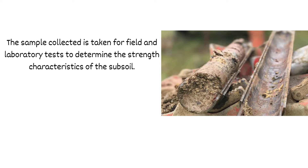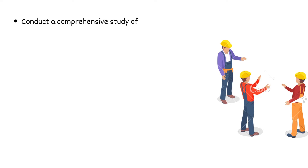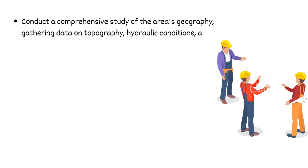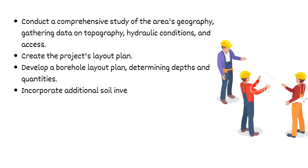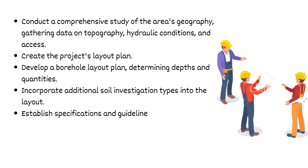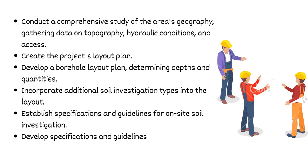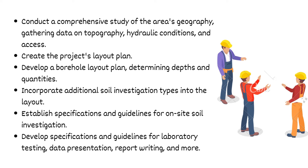Stage three is the plan for detailed investigation of the soil. This includes a detailed study of the geographical conditions of the area — collection of available information from the site like topography and geographical maps, topographical features, hydraulic conditions, water table fluctuations, flood conditions, and access to the site. It also involves preparing the layout plan of the project, preparing the borehole layout plan with depth and number of boreholes marked on the layout, identifying additional types of soil investigation needed, preparing specifications and guidelines for field investigation, laboratory testing of collected samples, and presentation of field and laboratory test results. This is mainly involved when the project is large and the area under investigation is very large, requiring test samples from many distributed locations. You need a proper plan about how many samples, at what depth, and at what location, so that you have a record of all those factors.